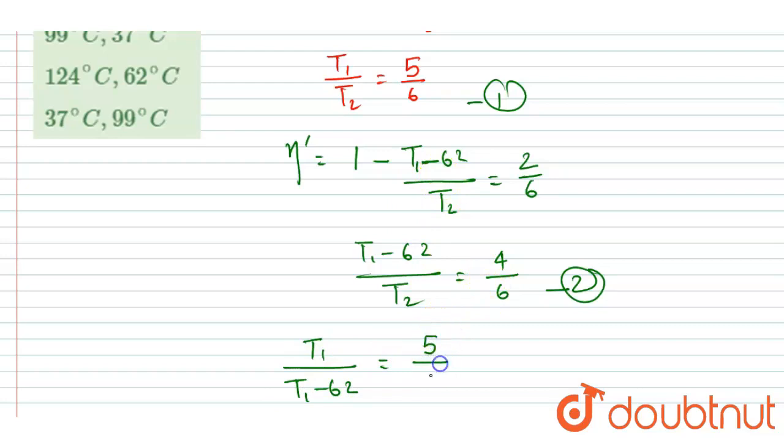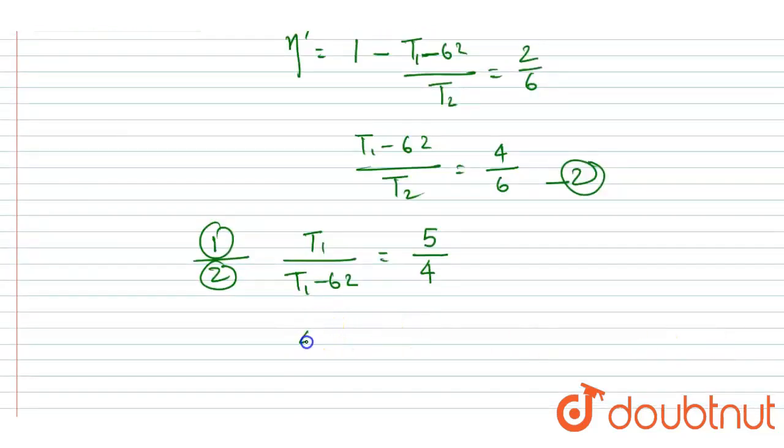You will get 5/4 on the right side. What did I do here? I divided equation 1 by equation 2, so T₂ will be cancelled out.